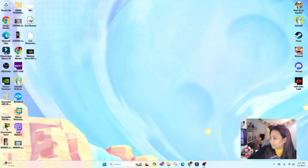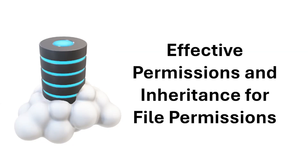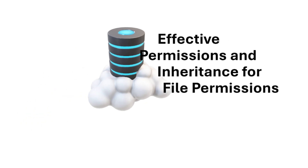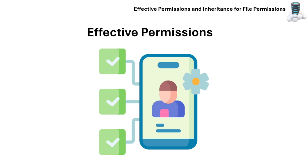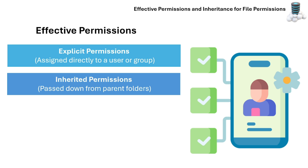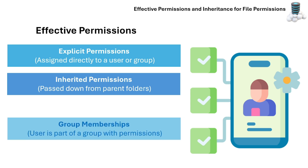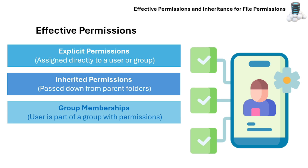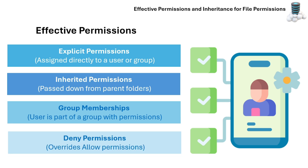Let's get started. In this part of the video I'll be explaining effective permissions and inheritance, but if you already know this concept you can skip to the hands-on section. Effective permissions refer to the actual set of permissions a user or group has on a file or folder. These come from multiple sources: explicit permissions assigned directly to a user or group, inherited permissions passed down from parent folders, group memberships, or deny permissions which override allow permissions.